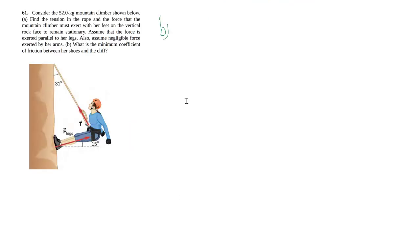So on to part b. This is the actual friction bit. We're asked for what is the minimum coefficient of friction between her shoes and the cliff. When we talk about the minimum this is where our inequality comes in.